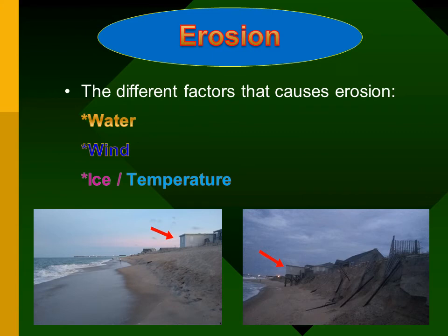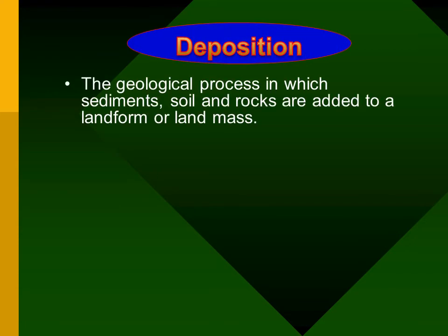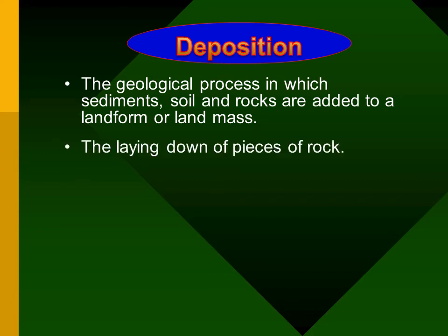So we can conclude that the factors that cause erosion are water, wind, ice, and temperature. Finally, after erosion, all the materials or bits of rock are laid down in one place. This process is called deposition — the geological process in which sediment, soil, and rocks are added to a landform or land mass. Simply put, the laying down of pieces of rock is called deposition.